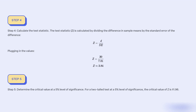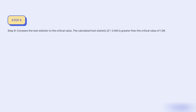Step 5: Determine the critical value at the 5% level of significance. For a two-tailed test at the 5% level of significance, the critical value of Z is plus or minus 1.96. Step 6: Compare the test statistic to the critical value. The calculated test statistic Z equal to 3.84 is greater than the critical value of 1.96.